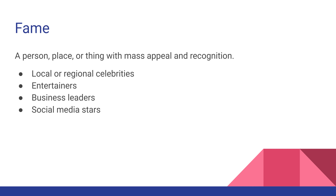The fame element refers to a person, place, or thing with mass appeal and recognition. This could be a local celebrity — like meteorologist Rob Perillo with mass local appeal — a regional celebrity like Chef John Foss, or national and international figures like Elon Musk. These people don't have to be someone a person likes; they just have to be recognizable. So if I say Elon Musk shot another rocket into space, that would have mass fame appeal because people recognize his name immediately.